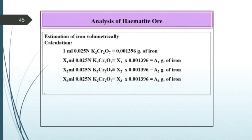Calculation: 1 ml of 0.025 normal K2Cr2O7 corresponds to X1 × 0.001396 = A1 gram iron. Similarly, do the calculation for X2 and X3 to get A2 and A3 respectively.